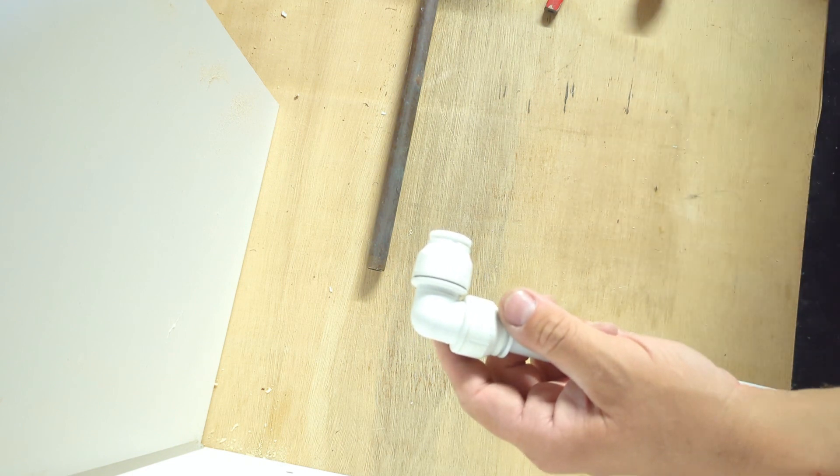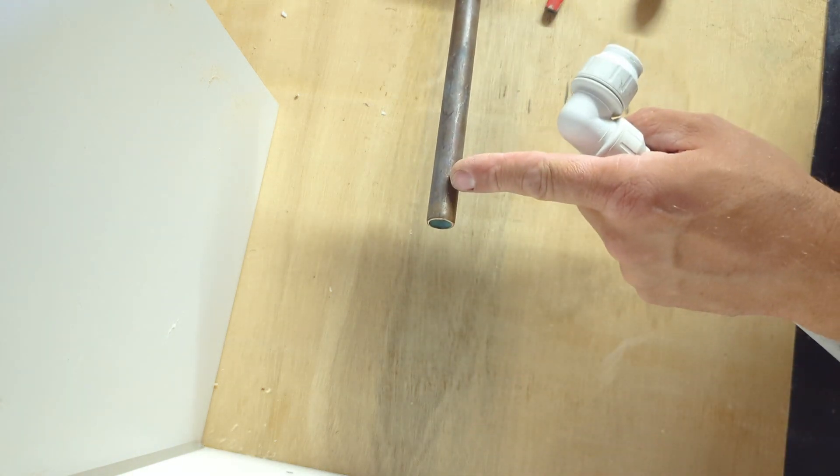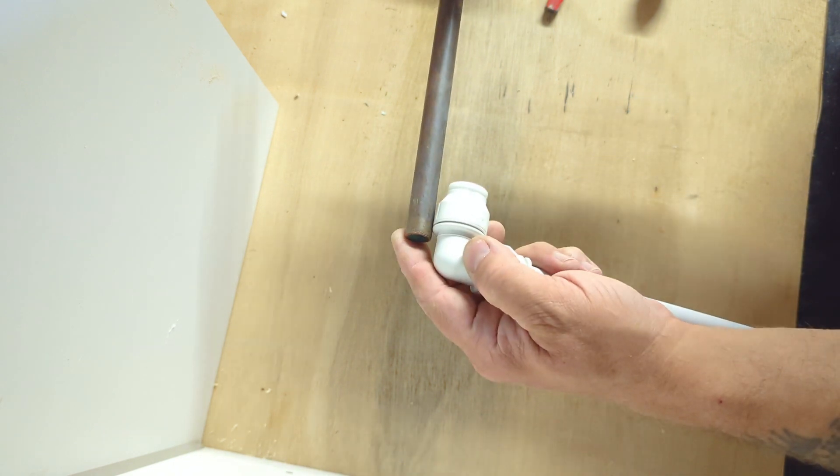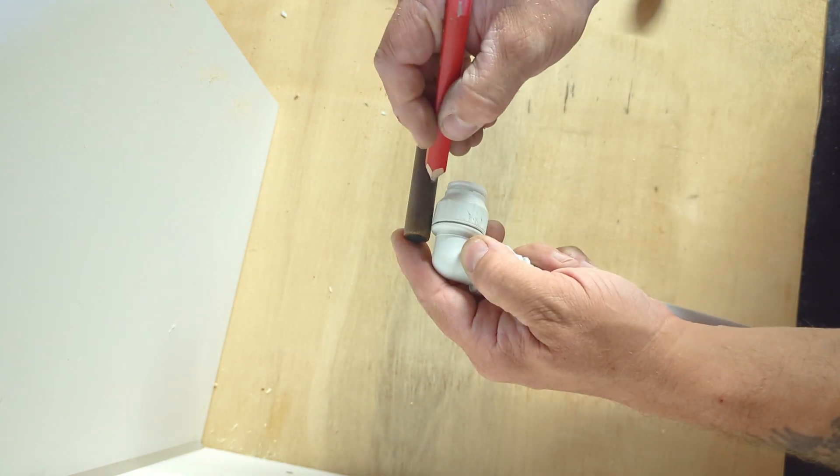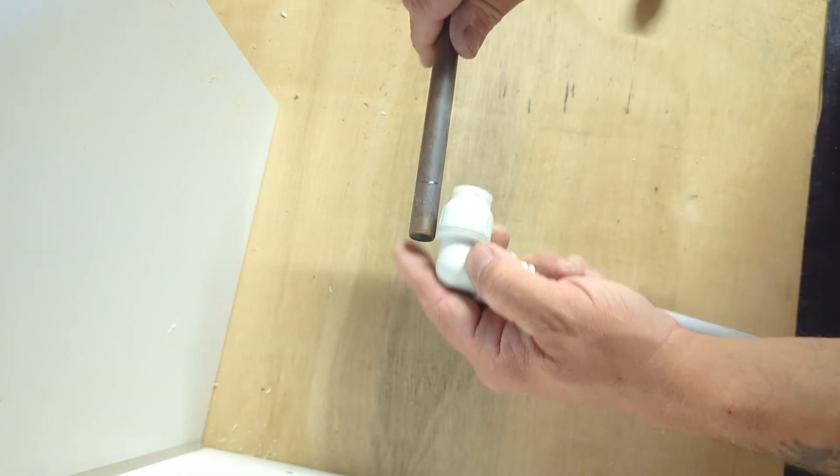And the same with the copper pipe. In this case, we don't need to put an insert because there's no risk of this pipe crushing under compression. Again, we'll mark the copper pipe so we know that our pipe is fully inserted into the fitting.